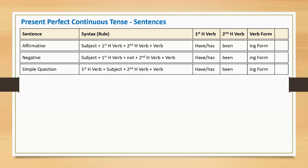A present perfect continuous simple question is an interrogative statement. It starts with the short form of the first helping verb 'have', followed by subject, second helping verb, and the main verb in ING form.